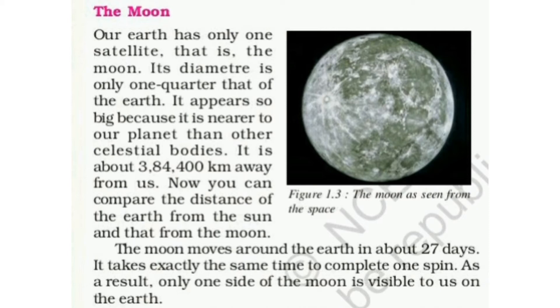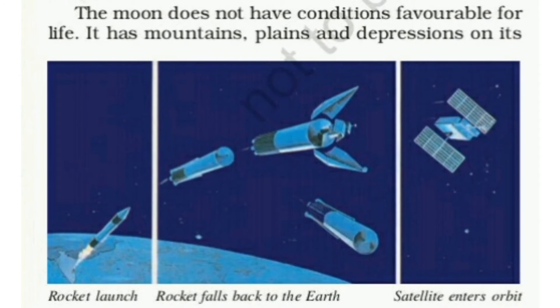Yeh hamse lagbhag 3,84,400 kilometres door hai. Ab aap prithvi se surya aur chandrama ki doorion ki tulna kar sakte hain. Moon Earth ka ek chakkar lagbhag 27 days mein poora karta hai. Lagbhag itne hi samay mein yeh apne aksh par ek chakkar bhi poora karta hai. As a result, Earth se hamein Moon ki only one side hi dikhti hai. The Moon does not have conditions favorable for life. It has neither water nor air. Moon par life possible nahi hai, kyunki yahan par na toh water hai aur na hi air hai.